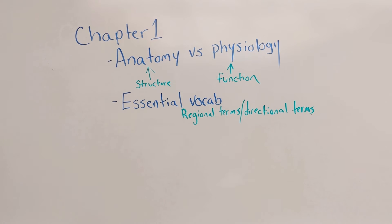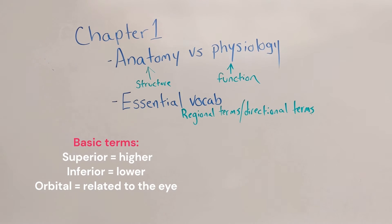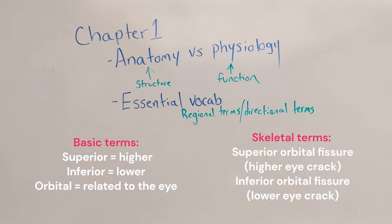There's also a lot of essential vocabulary in this chapter, including regional terms and directional terms. The reason you're learning this is because for the rest of the class these terms are going to be used in every single chapter. For example, you'll learn that superior means higher, inferior means lower, and orbital means eye. So when you get to the skeletal chapter, learning a term like superior orbital fissure is not difficult — but if you don't know those building blocks, it's like reading French when you don't speak French.